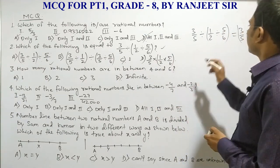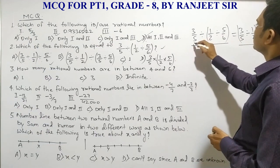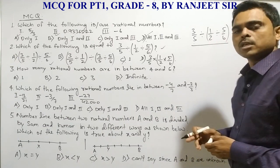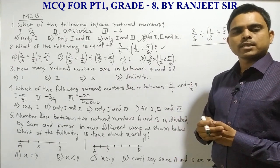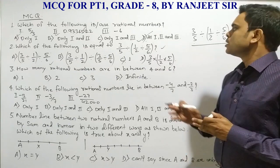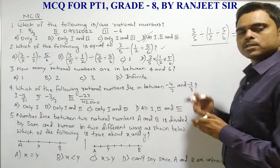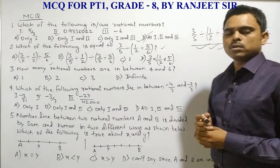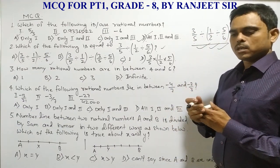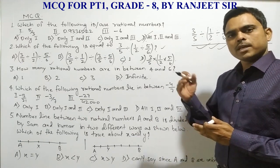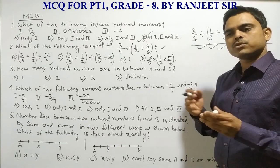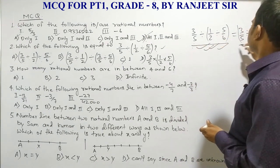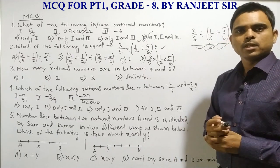In LHS we have 3/5, and in RHS also 3/5; 1/2 and 1/2; 5/6 and 5/6 — the same rational numbers are there on both sides, but what is different is the order, meaning the grouping. This is trying to represent the associative property. However, there is no associative property over division, so it will not be satisfied — these two expressions will not be equal to each other.